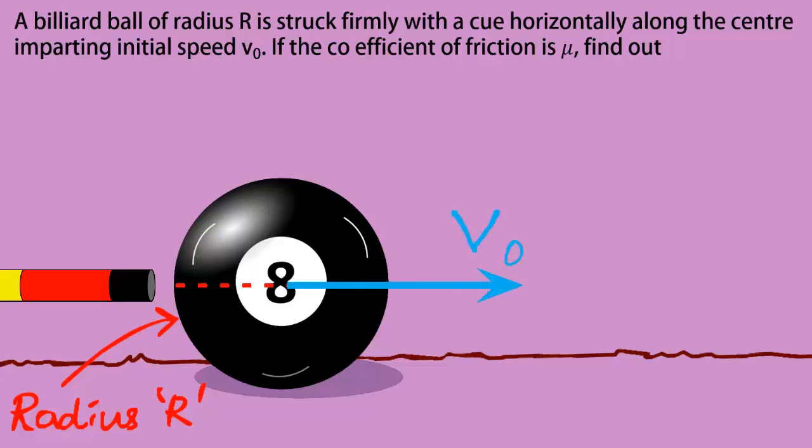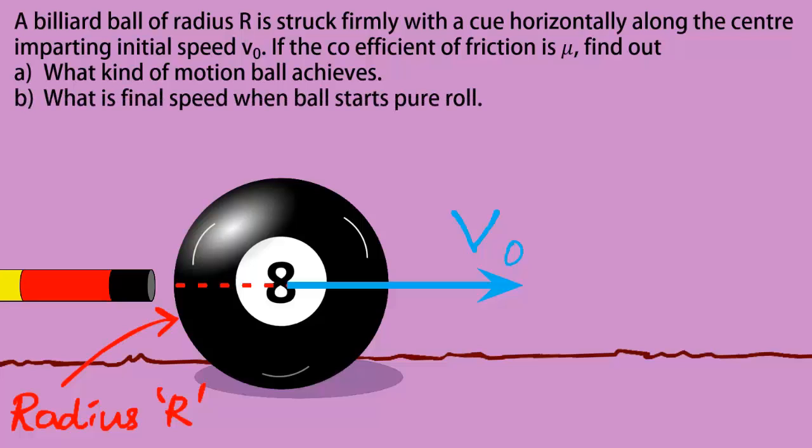The questions are: a) what sort of motion would the ball get? b) what would be the linear and the angular speed of the ball when it finally begins pure roll? And c) how much time before it begins pure roll?